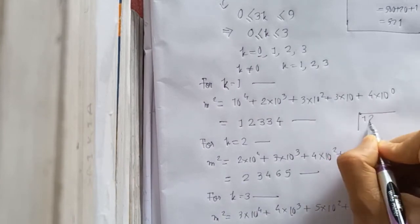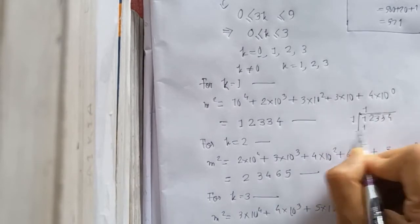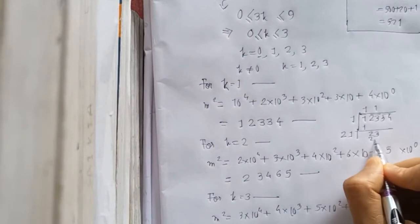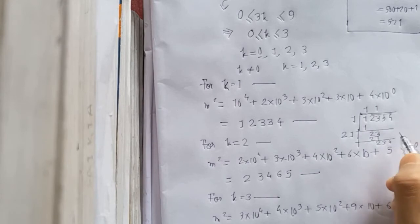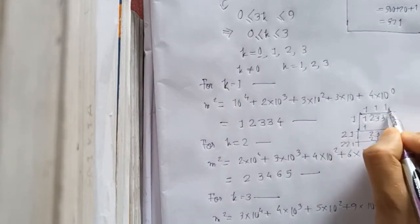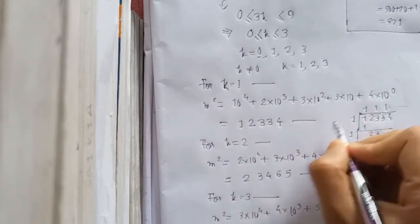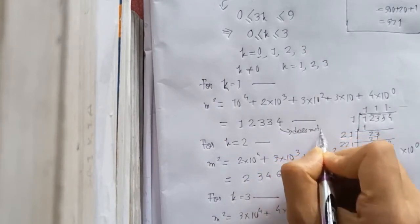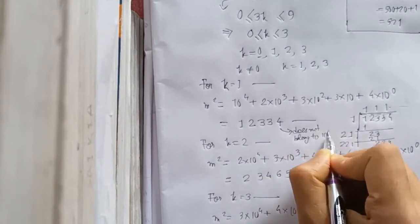Taking the square root, we get approximately 1.something, so it's not a natural number. Therefore m squared does not belong to the natural number set for that k value.